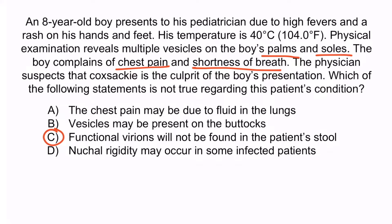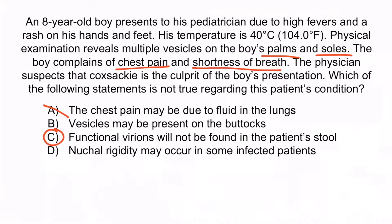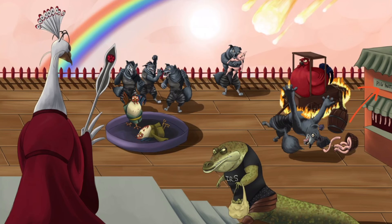Virions in the stool can be used to propagate an infection elsewhere. Recall that Coxsackie virus can actively replicate in the intestines and produce functional infectious virions in the stool. Choice A is wrong because it is a true statement — chest pain can be due to fluid in the lungs from heart failure secondary to myocarditis. Choice B is wrong because vesicles can indeed be present on the buttocks in addition to hands, feet, and mouth. Choice D is wrong because nuchal rigidity is also a true statement — meningitis is definitely possible with a Coxsackie infection, and since it's an enterovirus it can cause meningitis, which causes nuchal rigidity. With that, we've covered all the material you need to know about Coxsackie virus.